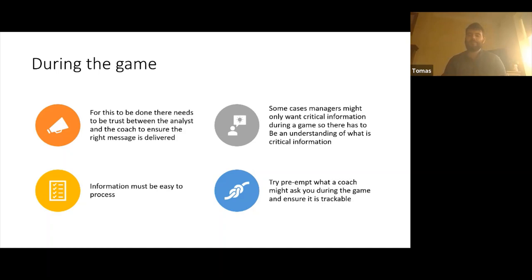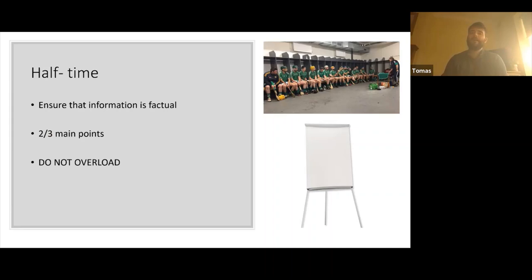At half time, ensure the information is factual. What we've had in the past is loading too much information to managers and players at half time and overloading them — and when we go back and double-check it afterwards, it's not right because we tracked too much. Two to three main points is all you need. Most of the time players are going to be seeing it themselves anyway, so you're just giving them information to back up those points. The big thing here is do not overload them.